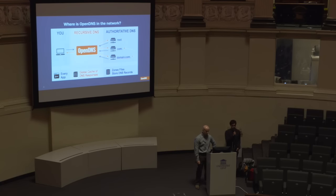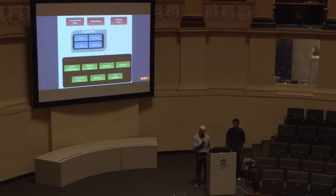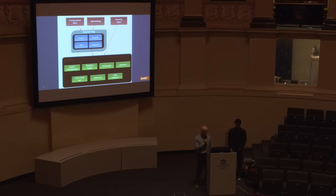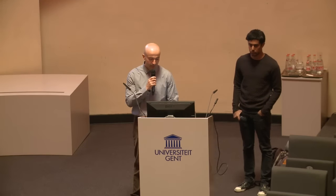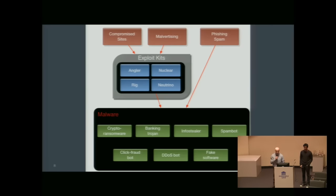Both of these are extremely valuable types of DNS data. Now let's take a look at the threat landscape we're trying to cover. When talking about financially motivated cybercrime, the bad guys try to infect as many machines as possible with a variety of malware. It could be crypto ransomware, a banking Trojan, bots for DDoS, spam, or ad fraud.